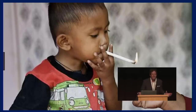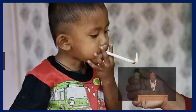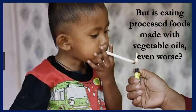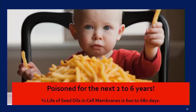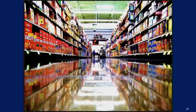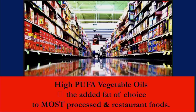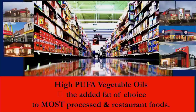This looks like child abuse — but is eating processed foods made with vegetable oils even worse? I submit that it indeed is. Because when a two-year-old boy eats those french fries, he's essentially poisoned for the next two to six years — the half-life of these oils in cell membranes is 600 to 680 days. And these oils aren't just in french fries; they're in hundreds of thousands of foods around the planet.